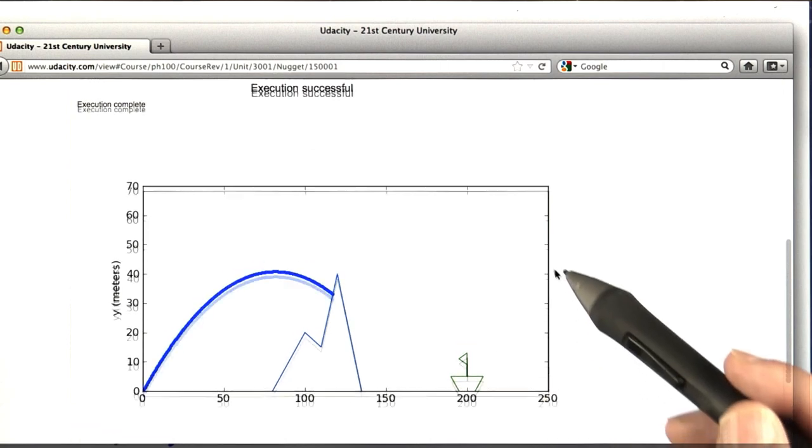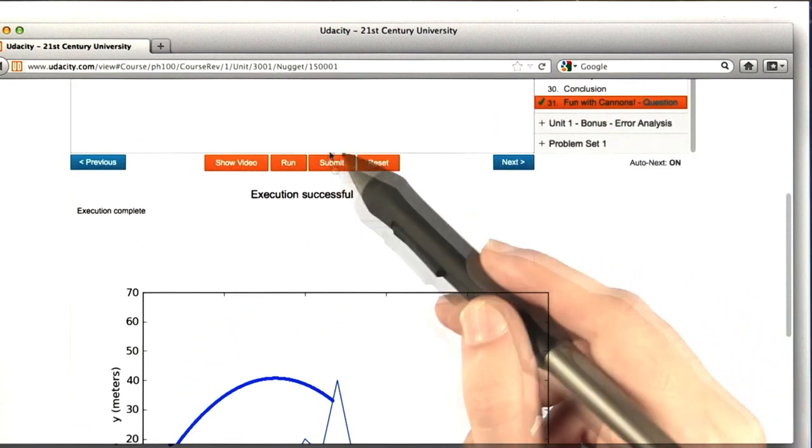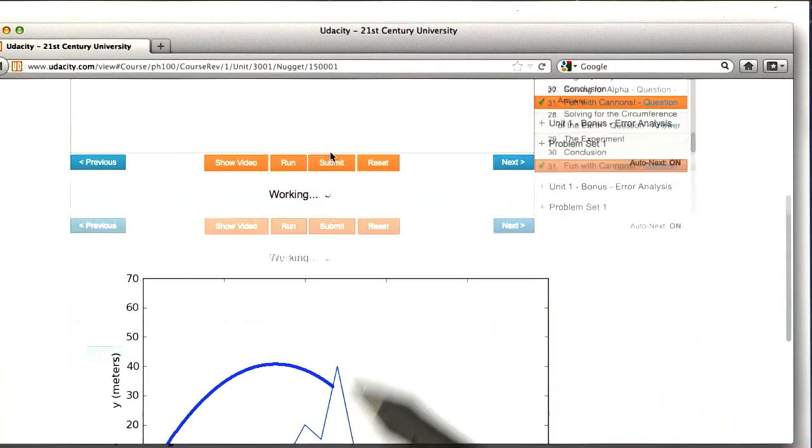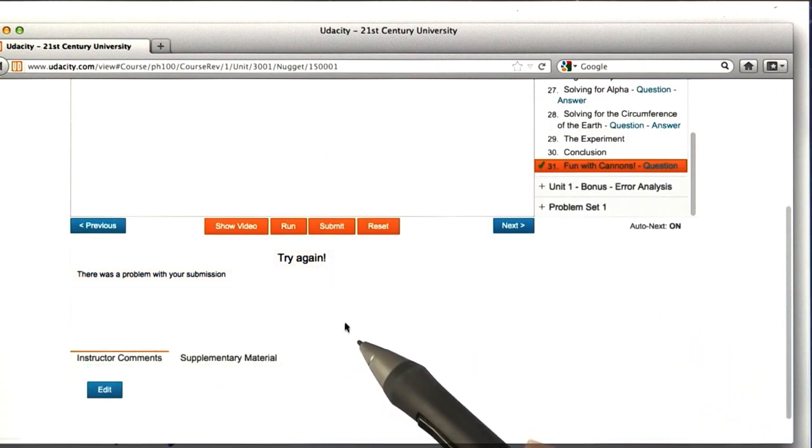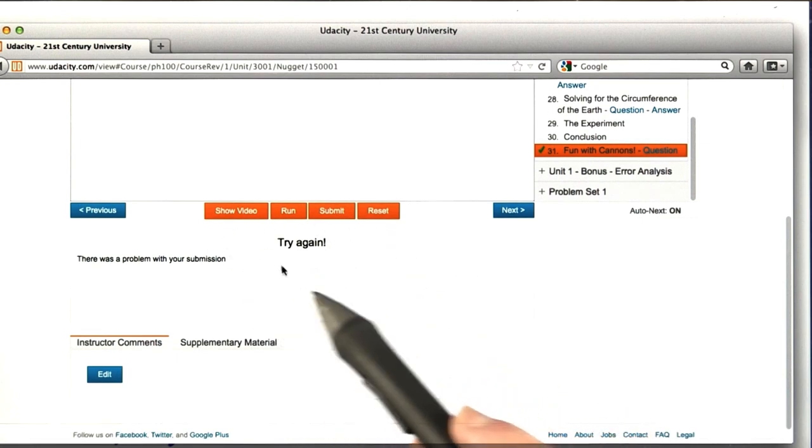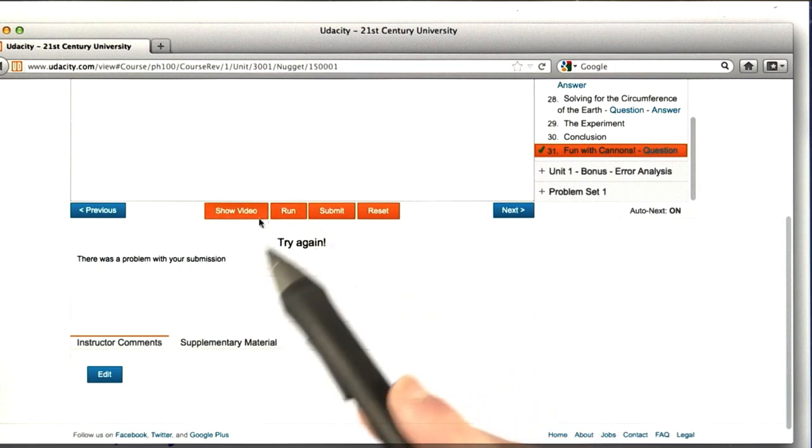Once you've hit the enemy ship, you should scroll up and then press Submit to submit your homework for grading. Now, currently, my cannonball doesn't work quite right because it hits the iceberg, so I get this try again message, but once you hit the ship, you should get a you got it correct message, and that way you know your homework's been counted.